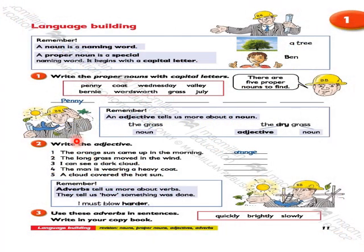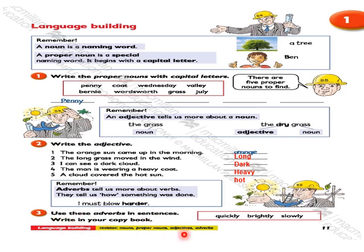Moving to language building on page number 11. Remember: a noun is a naming word; a proper noun is a special naming word. Write the adjective in each sentence: 'The orange sun comes up in the morning' — adjective is 'orange.' 'The long grass moved in the wind' — adjective is 'long.' 'I can see a dark cloud' — adjective is 'dark.' 'The man is wearing a heavy coat' — adjective is 'heavy.' 'A cloud covered the hot sun' — adjective is 'hot.' Remember, adverbs tell us more about verbs — how something was done. 'I must blow harder.' Use these adverbs in sentences and write in your copy book.